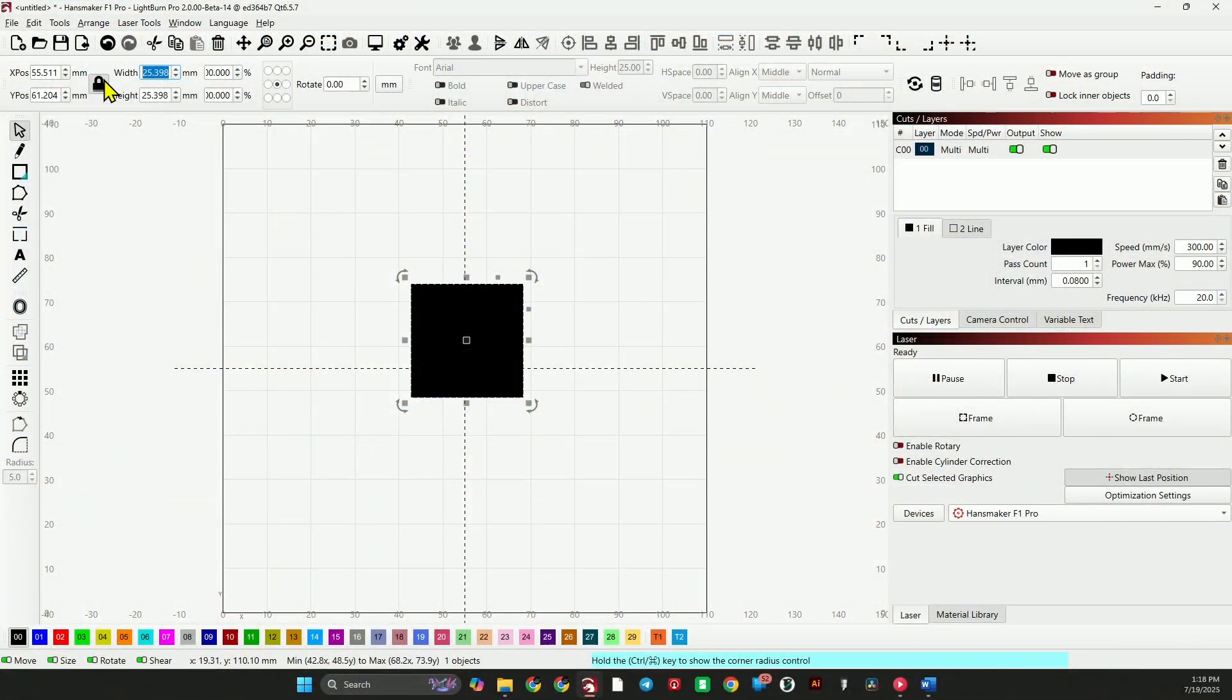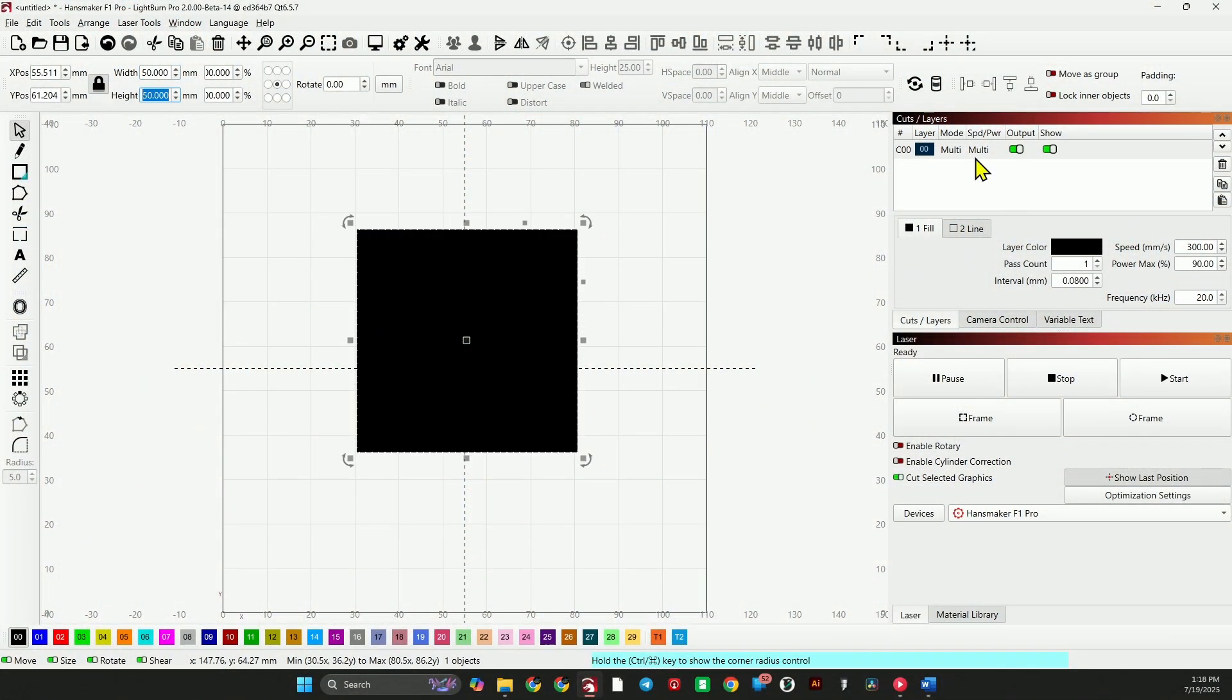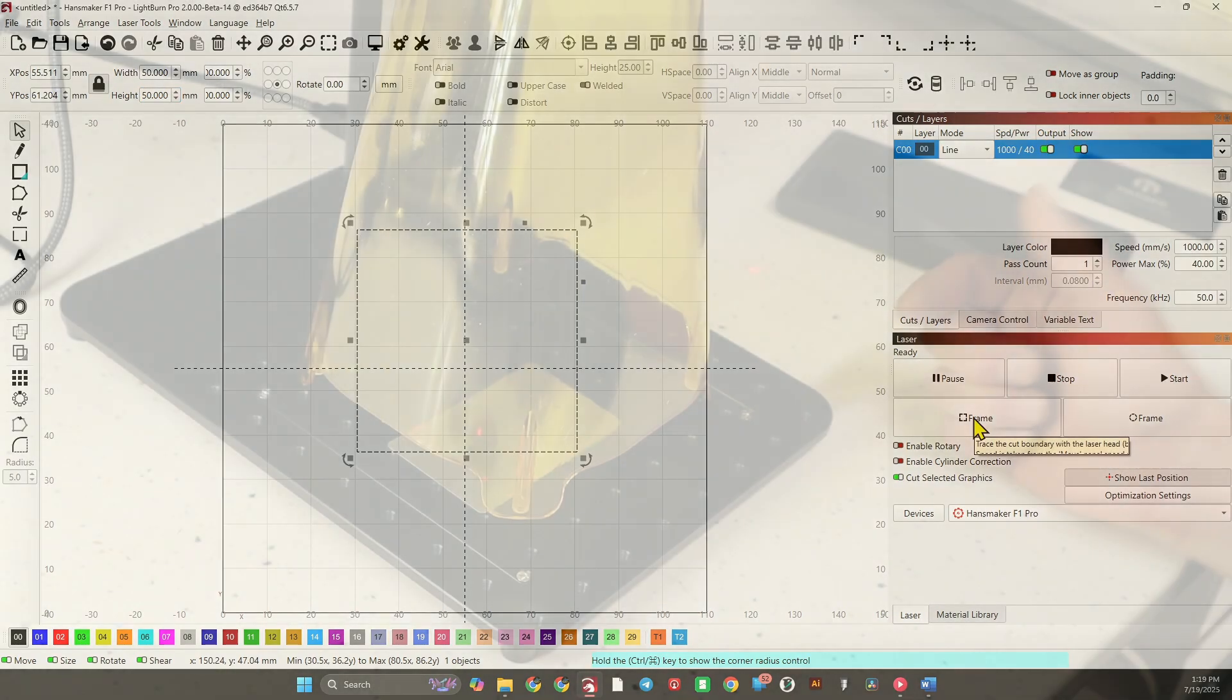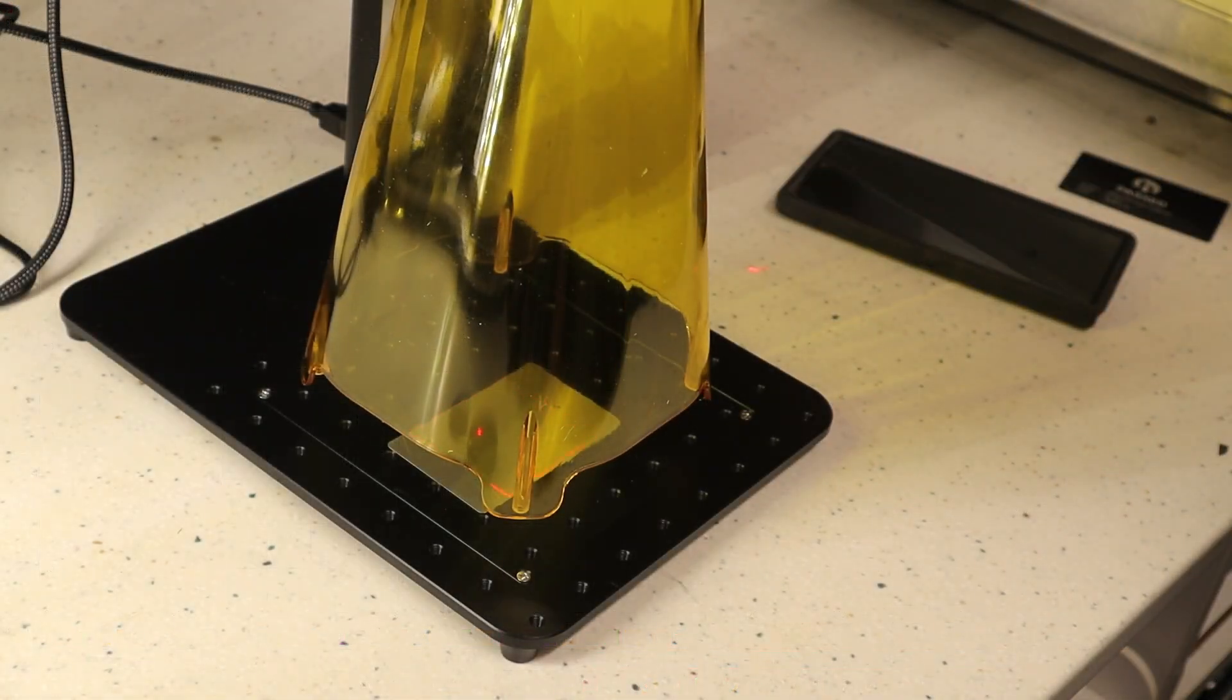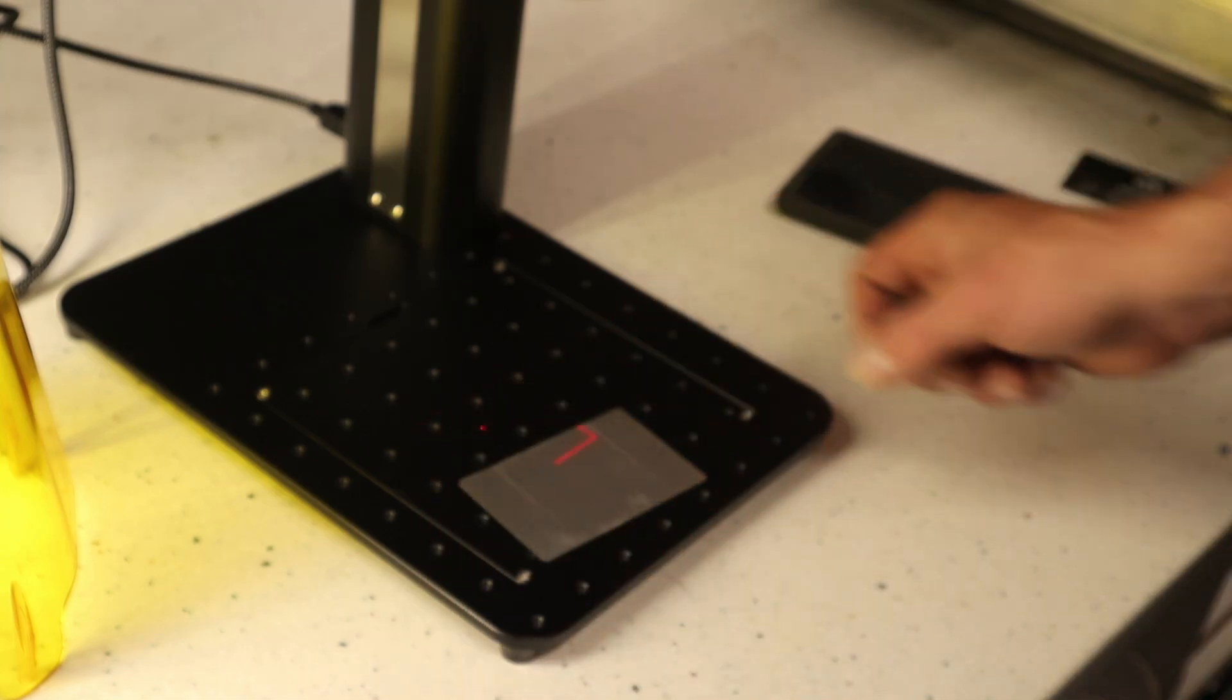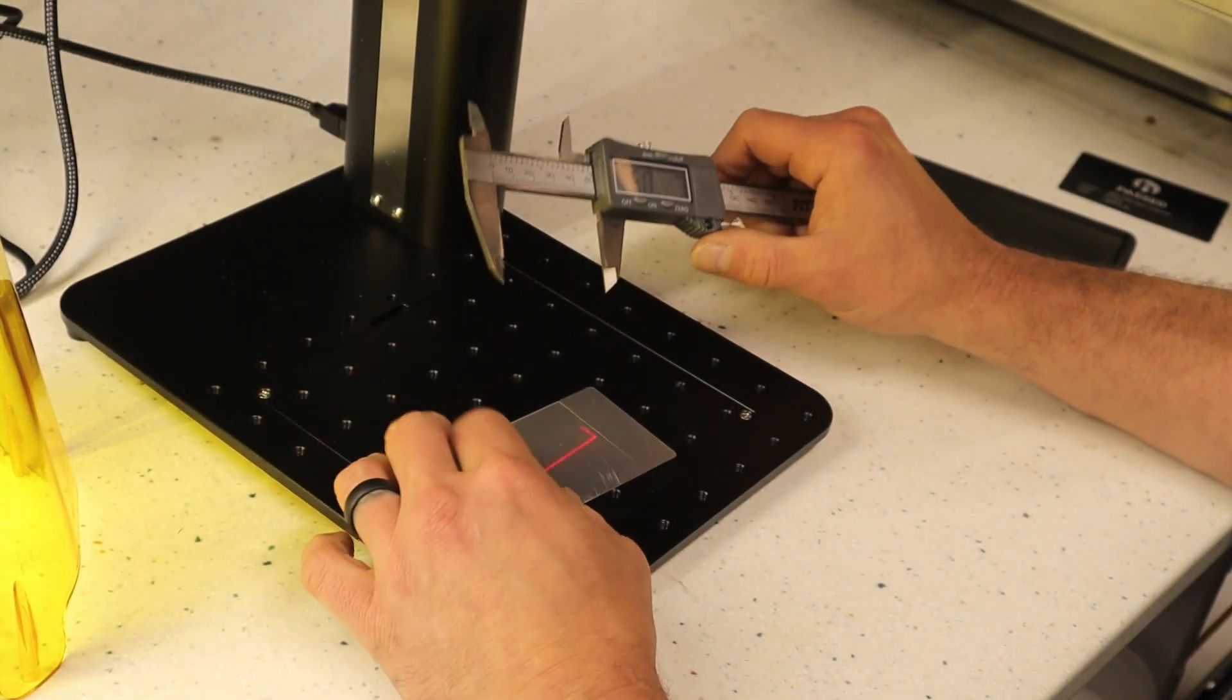Now, I'm going to make a 50 by 50 box. And what I'm going to do is set this to line. Now, let's frame that on the laser. This should tell us when we're at our ideal focal distance. Let's hit start and see what happens. All right. We do have our line there. Let me measure that right on the money at 50.